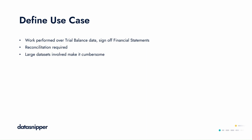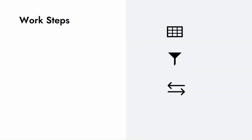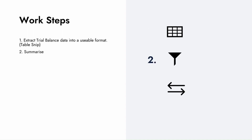For our work steps, we will extract the trial balance data into a usable format by utilizing the table snip functionality. Next we're going to create a pivot table in Excel to summarize the trial balance data. Finally, we're going to use document matching to reconcile the summarized trial balance data in the financial statements to ensure that the balance included in the final financial statements is accurate.